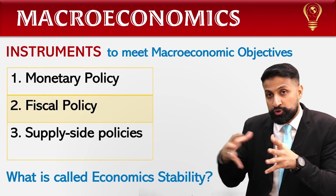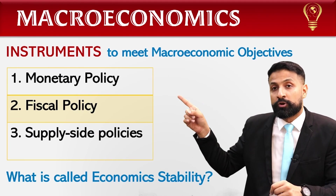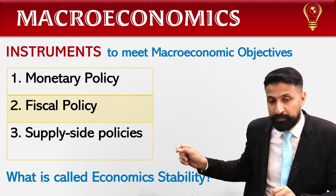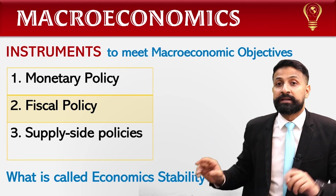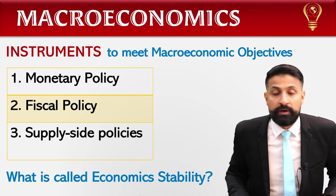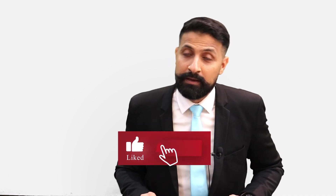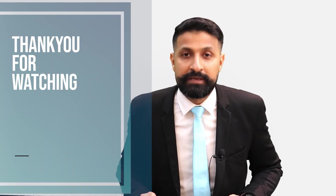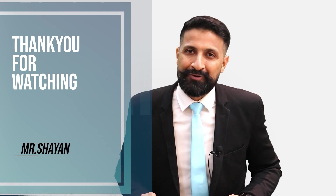تو instruments جو use ہوتے ہیں to achieve macro economic objectives — تین instruments ہیں: monetary policy، fiscal policy، supply side policy۔ اور میں نے آپ کو سمجھایا کہ economic stability کیا ہوتی ہے۔ This was my lecture on the instruments to achieve macro economic objectives۔ امید کرتا ہوں آج کا lecture پسند آیا اور سمجھ بھی آیا۔ اگر آپ نے channel کو subscribe نہیں کیا تو کر دیں، اور اگر کر چکے ہیں تو شکریہ — دوسروں تک بھی پہنچائیں۔ Thank you so much for watching.